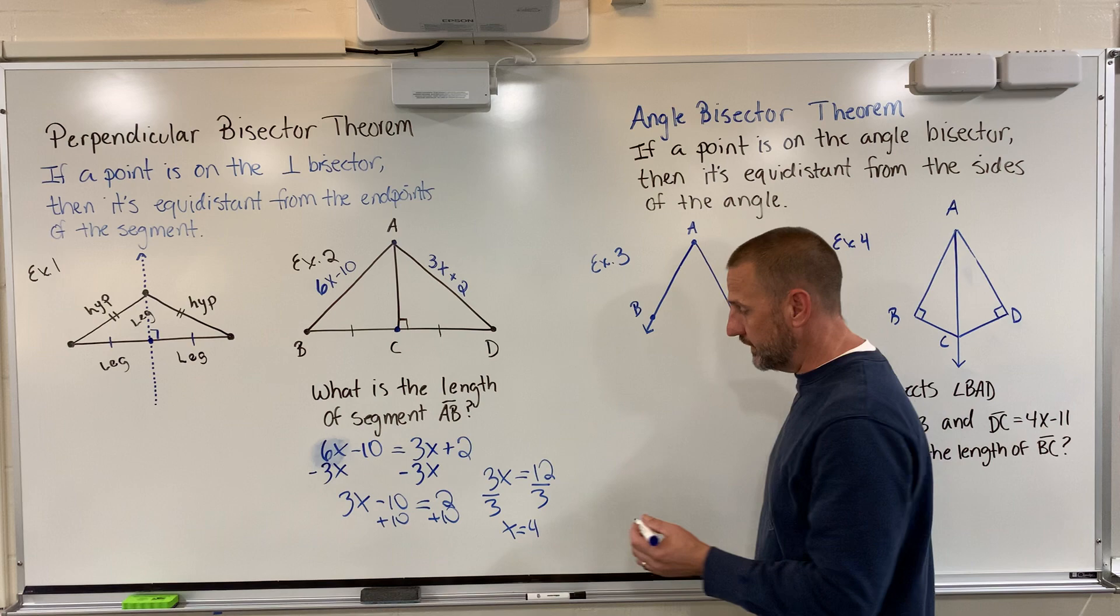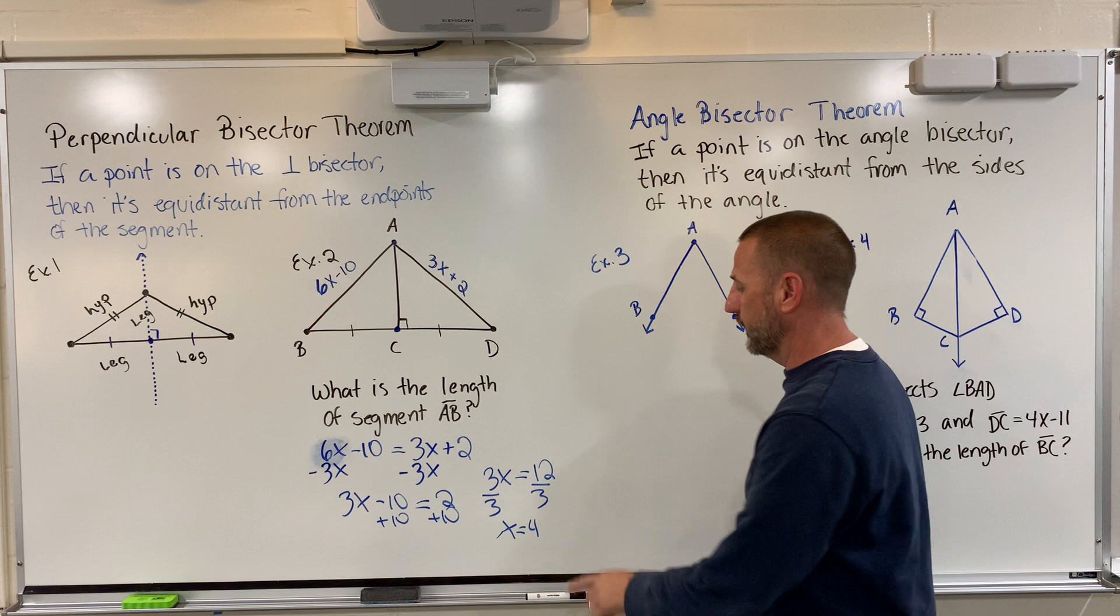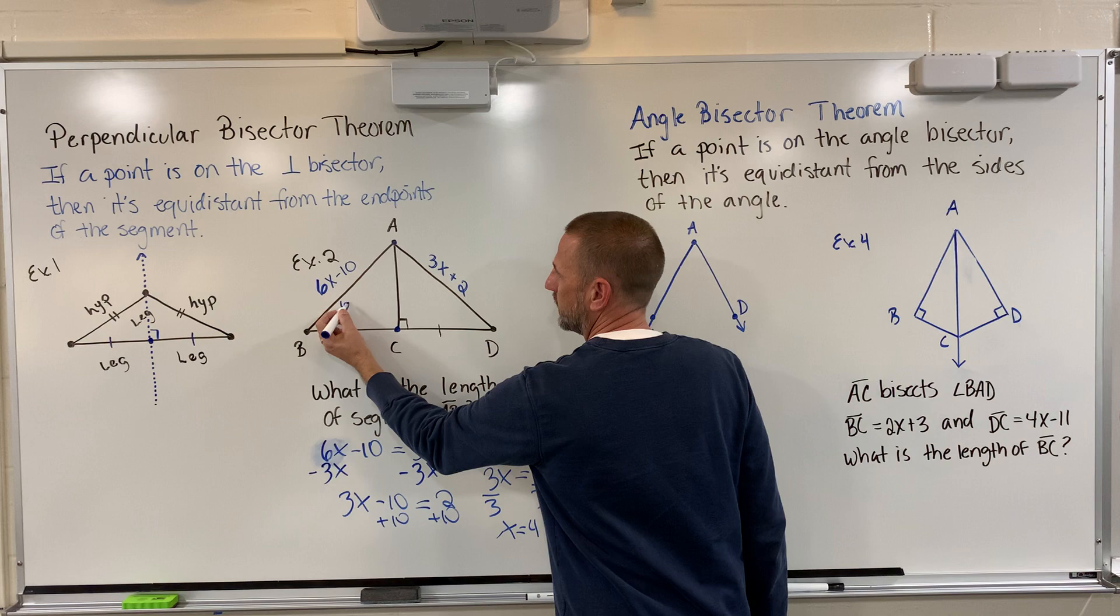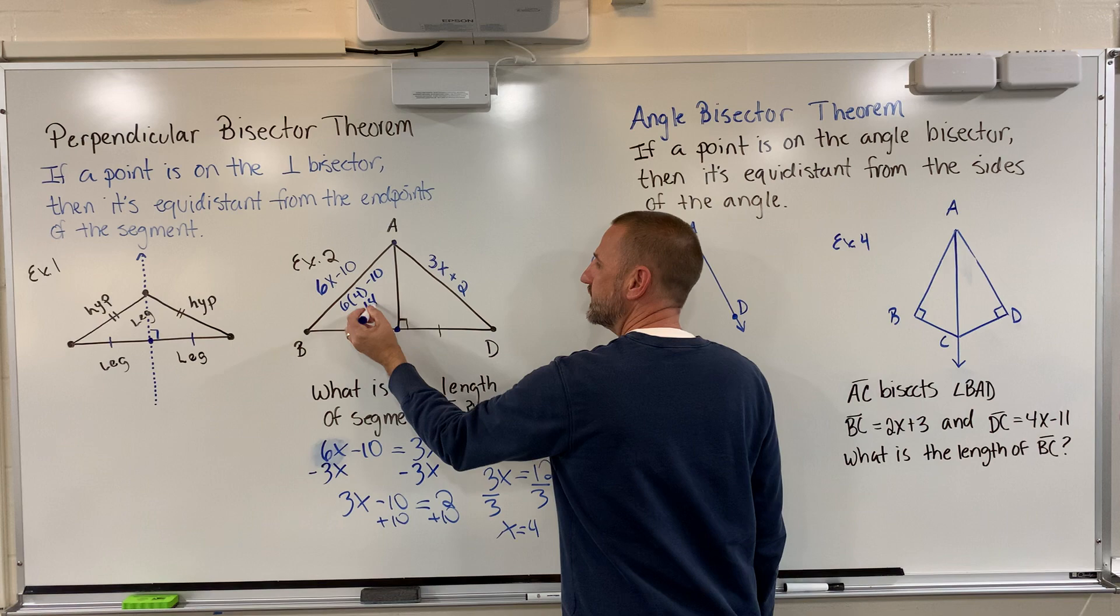That's great, and algebra teachers everywhere will be excited, but we are looking for the length of AB. What we need to do is take that value, x equals 4, and we need to substitute it in for the segment marked AB. I've got 6 times 4, that's 24, minus 10. 6 times 4 is 24, minus 10 gives me 14.